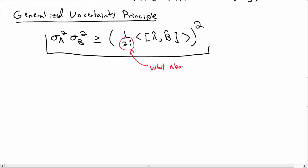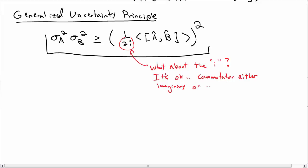You might wonder about the i in the denominator — doesn't it make the right-hand side negative? It turns out it won't. The expectation value of the commutator will be either purely imaginary or zero, so the overall expression remains non-negative.